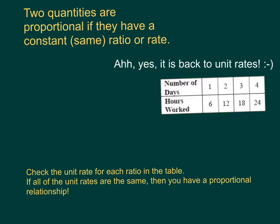Two quantities are proportional if they have a constant or the same ratio or rate. That means that each one of the ratios found in the table — here, here, here, and here — all need to have the same unit rate. So in order to determine if the table is proportional, we need to test each ratio in that table.